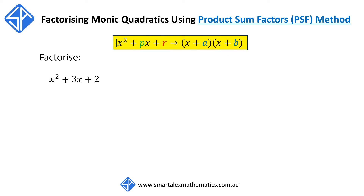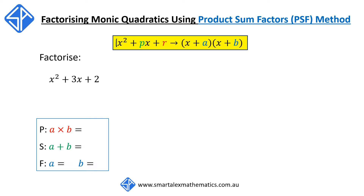Let's look at our first example. We're going to factorise x squared plus 3x plus 2 using the PSF method. P stands for product — we're going to look for two numbers a and b that multiply to give the constant 2. S stands for sum — we're going to look for the same two numbers a and b that add to give the coefficient of x, which is 3.